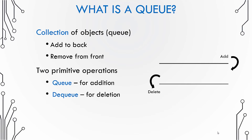There are basically two primitive operations in a queue. One is addition, which is called enqueue, and another is deletion, which is called dequeue. The notation is quite simple — you write queue and pass the number or object you want to add. The dequeue function deletes an object and usually returns the object that has been removed from the queue.